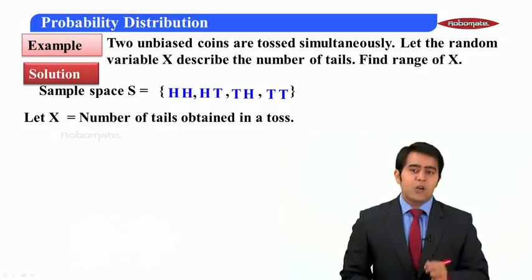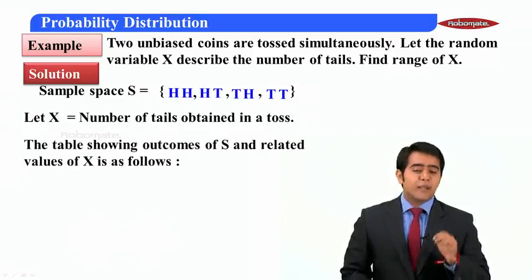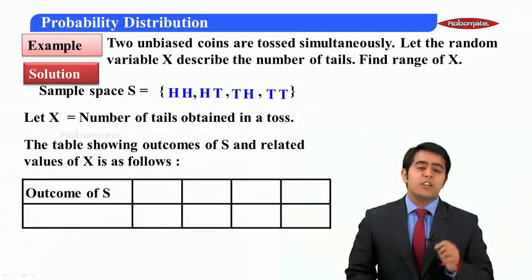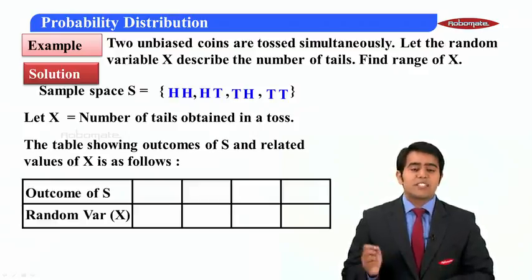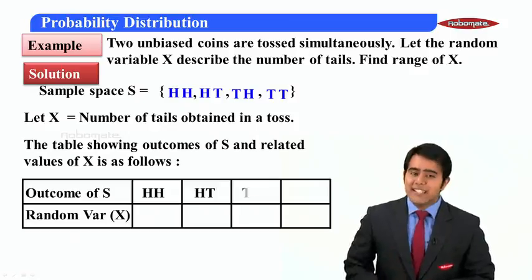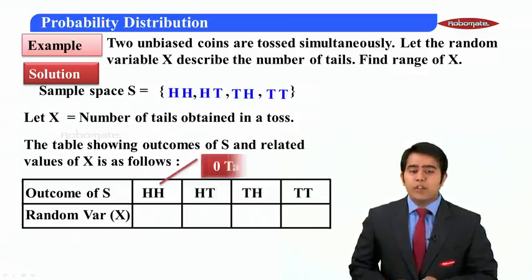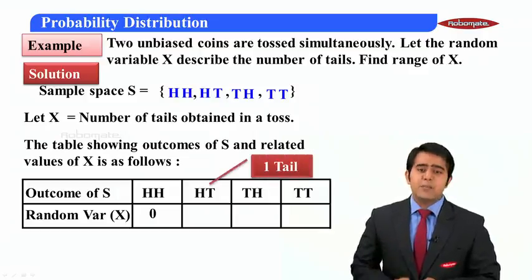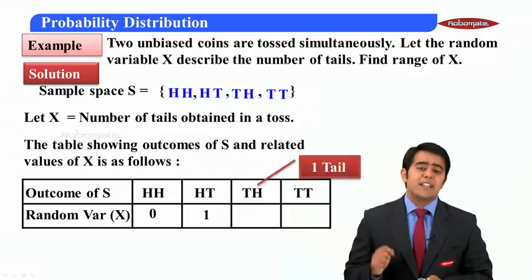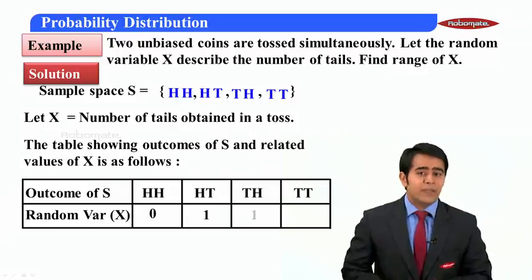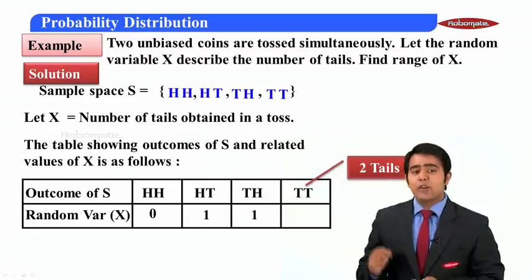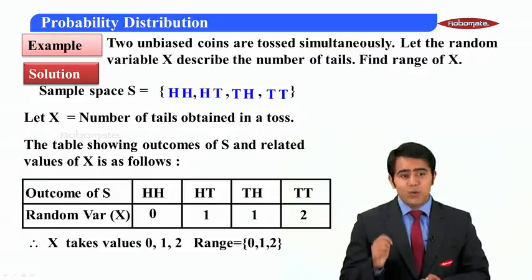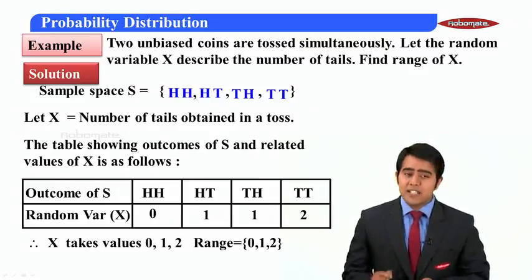Let x be the number of tails obtained in a toss. The table shows outcomes of S and related values of x: HH gives zero tails so x = 0; HT gives one tail so x = 1; TH gives one tail so x = 1; TT gives two tails so x = 2. Therefore x takes values zero, one, or two, and the range of x is {0, 1, 2}.